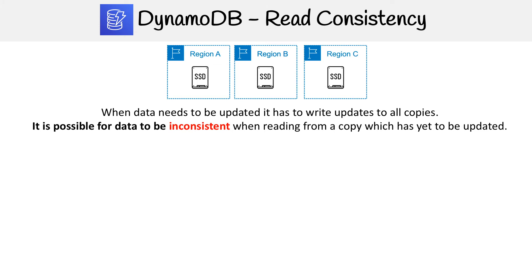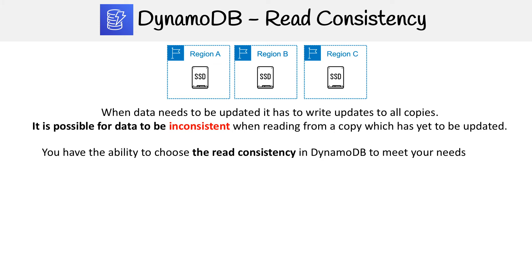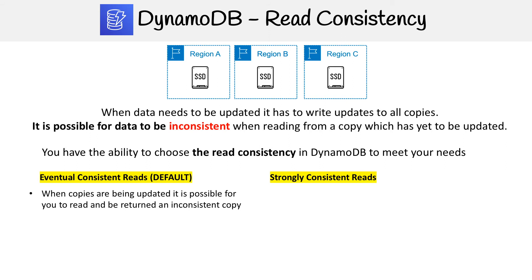The way you work around this is by choosing your read consistency. With DynamoDB, you can choose between two options: eventual consistent reads, which is the default, or strongly consistent reads. With eventual consistent reads, when copies are being updated, it is possible for you to read and be returned an inconsistent copy, because you're reading from a database which has yet to be updated. But reads are super fast, because you're not waiting for data to become consistent.